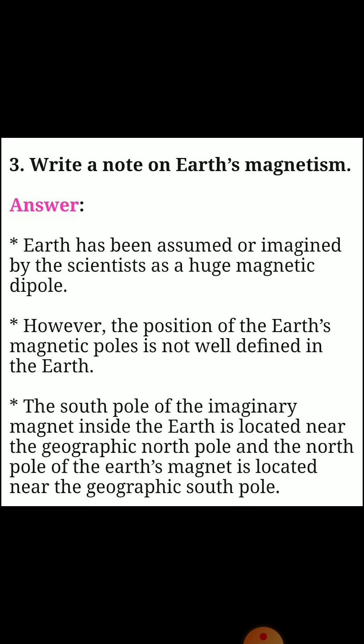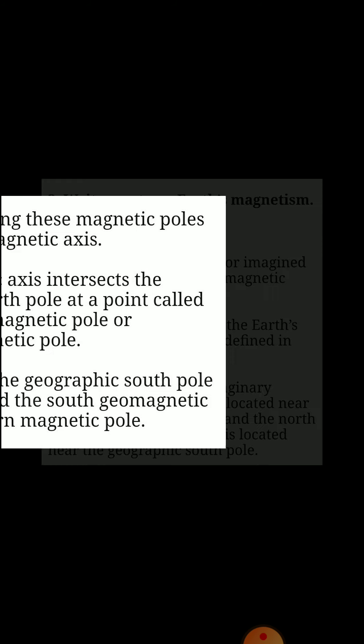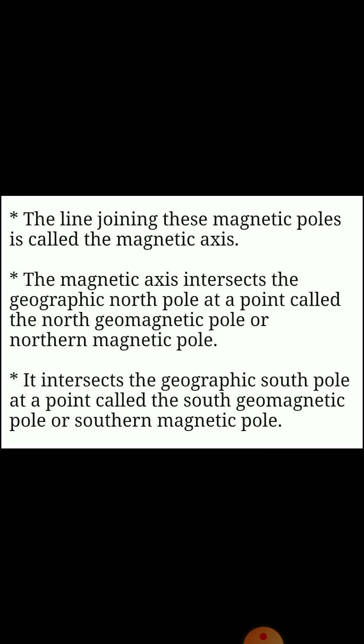Third one: write a note on earth's magnetism. Answer: the earth has been assumed by scientists as a huge magnetic dipole. However, the position of the earth's magnetic poles is not well defined. The south pole of the imaginary magnet inside the earth is located near the geographic north pole, and the north pole of the earth's magnet is located near the geographic south pole. The line joining these magnetic poles is called the magnetic axis. The magnetic axis intersects the geographic north pole at a point called the north geomagnetic pole or northern magnetic pole.